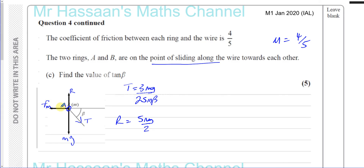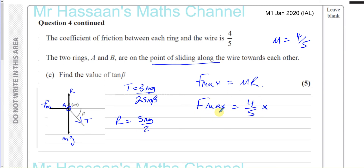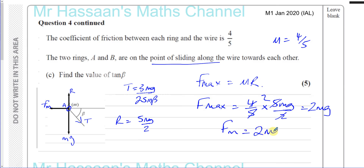F_max equals mu times R equals 4/5 times 5MG over 2. The 5s cancel, leaving F_max equals 2MG. So the maximum friction force acting horizontally is 2MG.